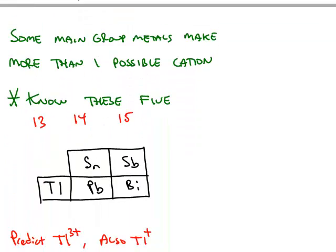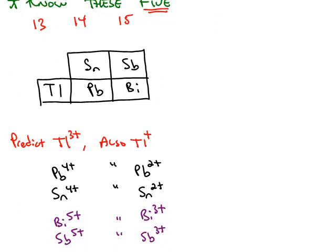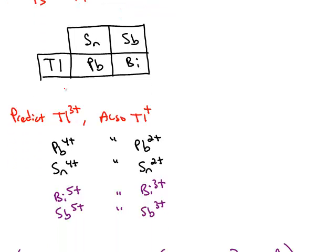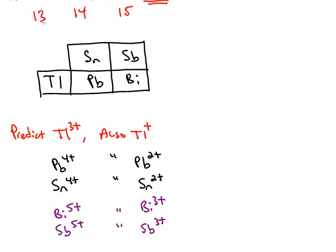Now, most main group metals only make one type of cation. But there are five common cations that have more than one possible charge, and these are in group 13, 14, and 15 of the periodic table. For example, we would predict that thallium should be a positive 3 because thallium is found in group 13 of the periodic table, but it also makes a positive 1.